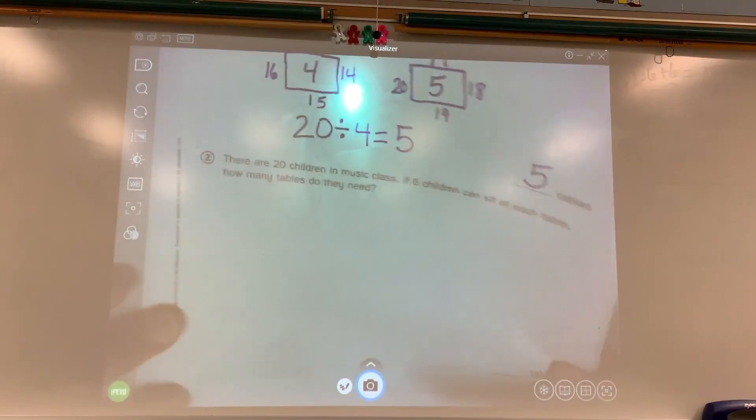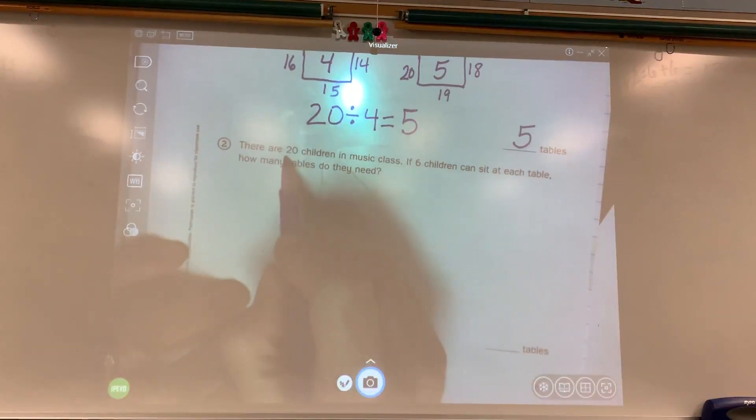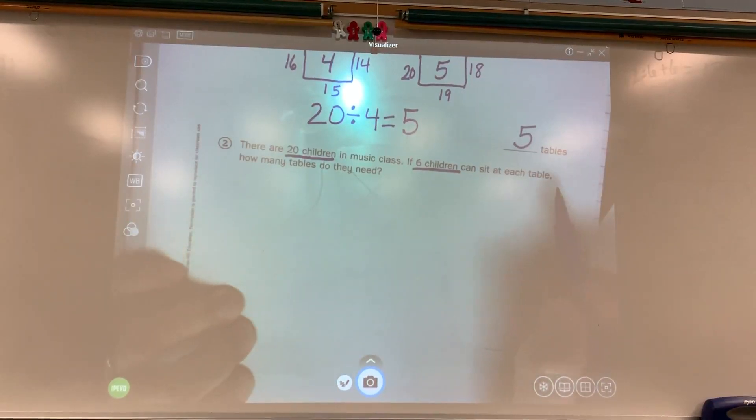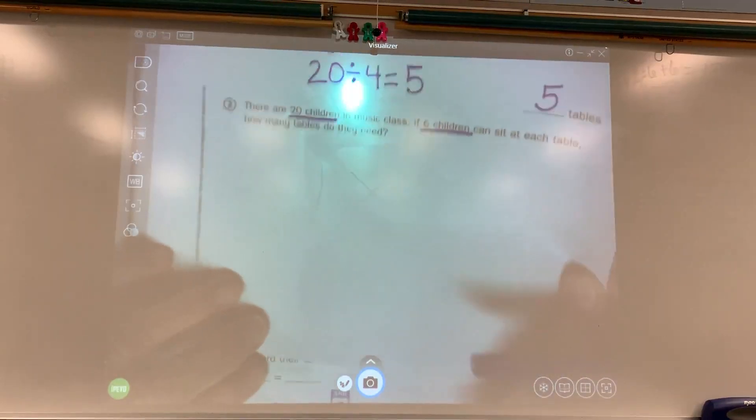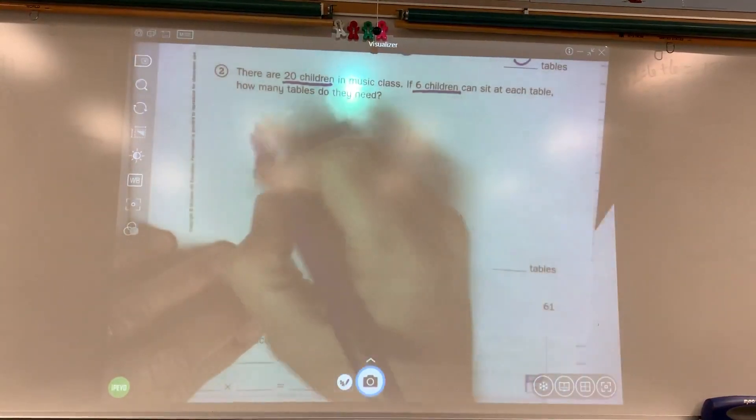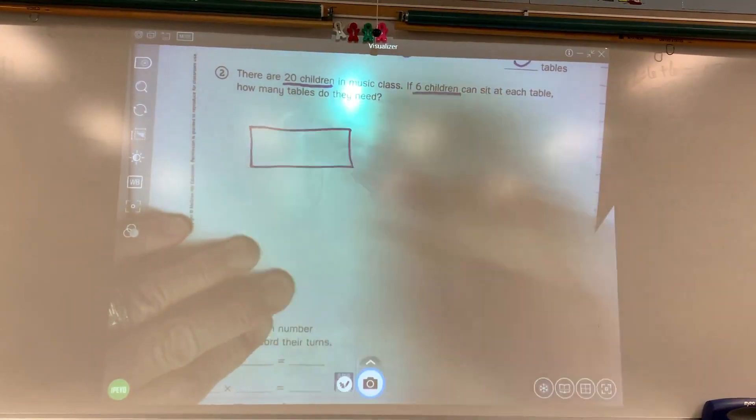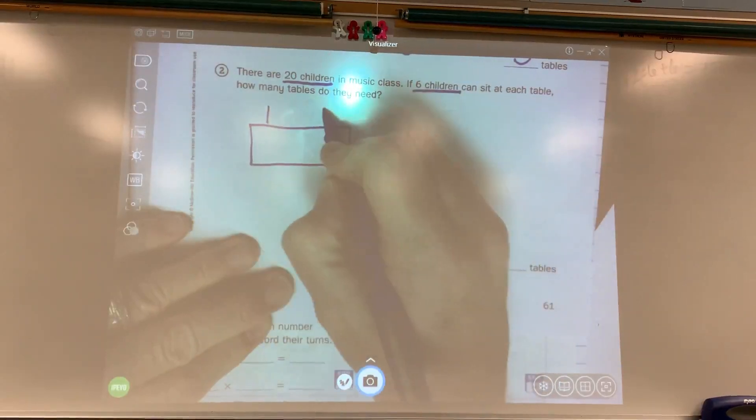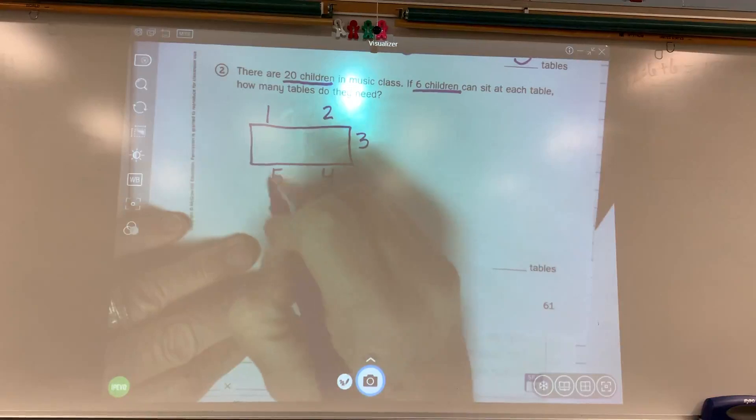My next problem is we have the same 20 children. However, now they can sit six children at each table. Well, let's see. I'm going to draw again my tables. I'm going to make them a little bit bigger this time because I can sit six people. So I have one, two, three, four, five, six.